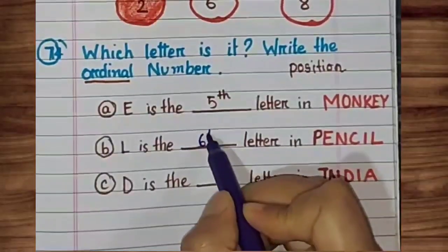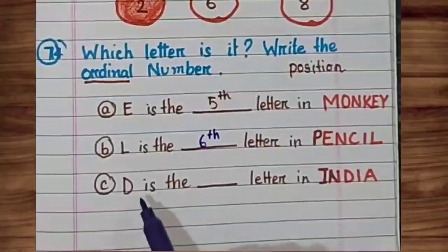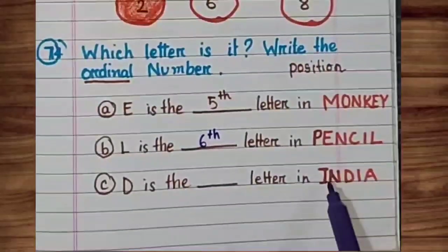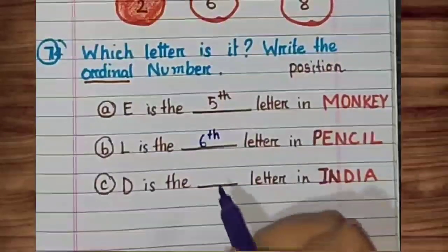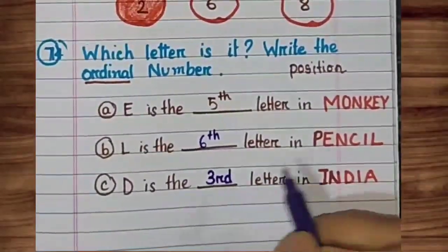Next, D ka position kya hai? India mein. I is the first position. N is the second position. D is the third position.